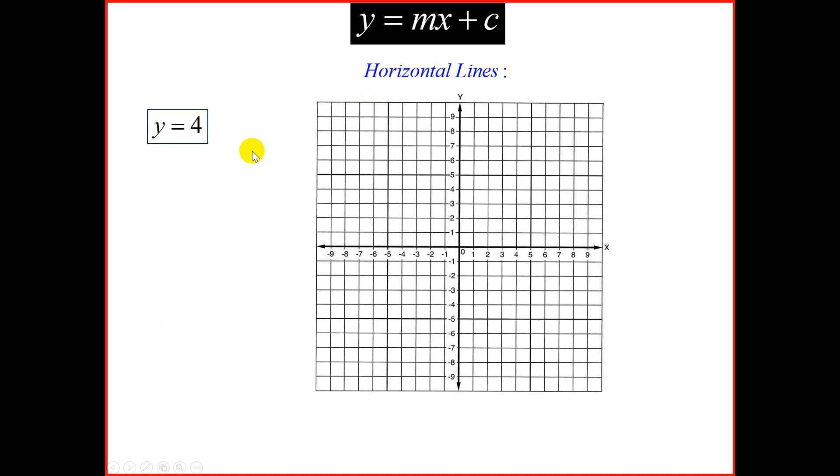We also have horizontal lines. y is equal to 4. We go on a y-axis to 4, and we draw a horizontal line. Another one, y equal to negative 3. On the y-axis, we go to negative 3, and we draw a horizontal line. Remember that in a horizontal line, the gradient is 0.